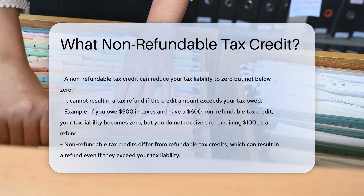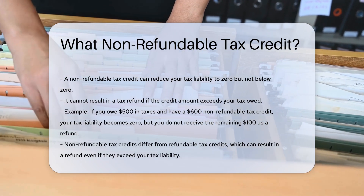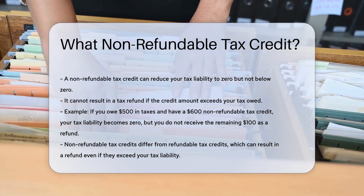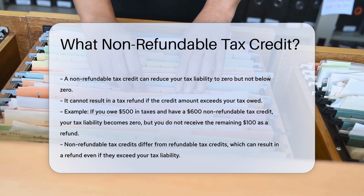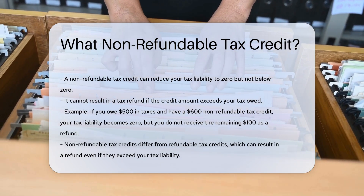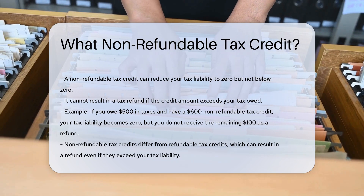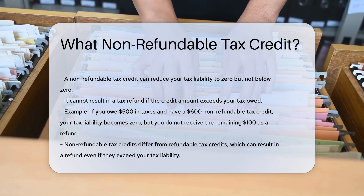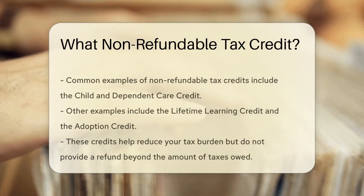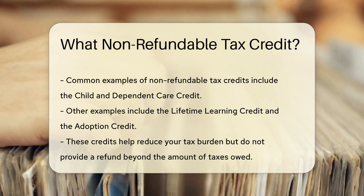This means it cannot result in a tax refund if the credit amount exceeds your tax owed. For instance, if you owe $500 in taxes and have a $600 non-refundable tax credit, your tax liability becomes zero, but you do not receive the remaining $100 as a refund.